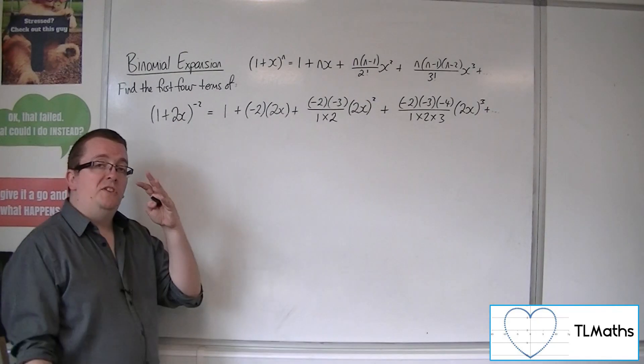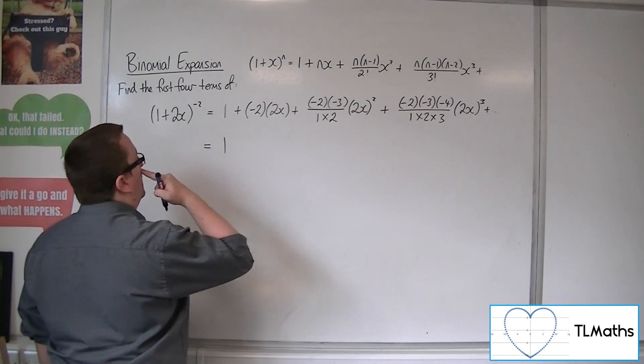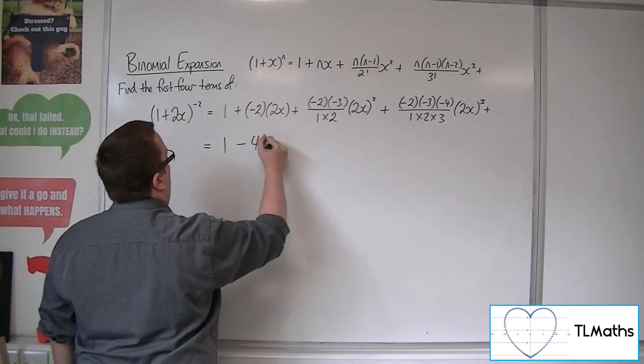OK, and now our job is to make sure we simplify this correctly. So we have 1, take away 4x.